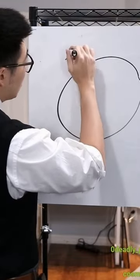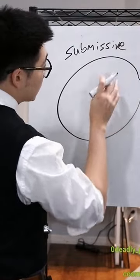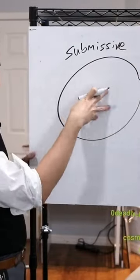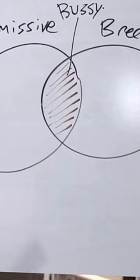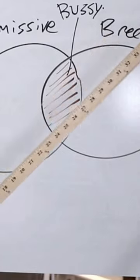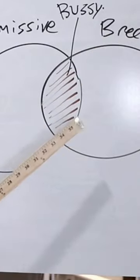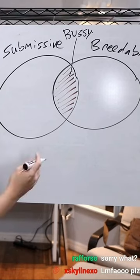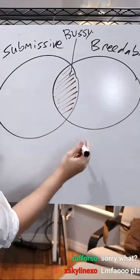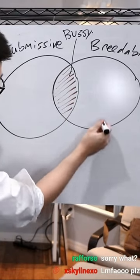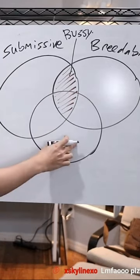So here we have submissive, here we have breedable. This is the bussy, where submissive and breedable meet. There's more to the theorem. So an example of the submissive and breedable Venn diagram — you can start to apply things here.